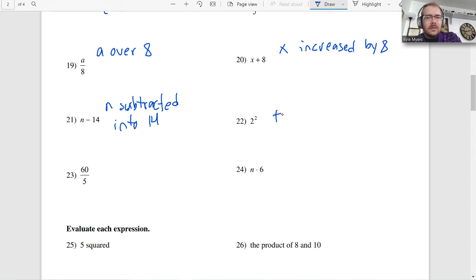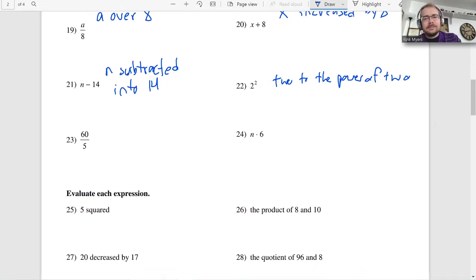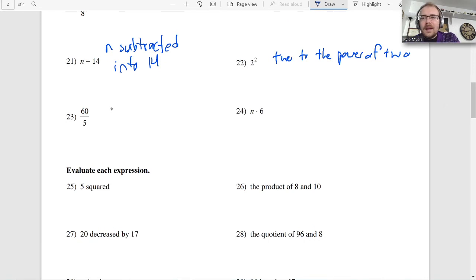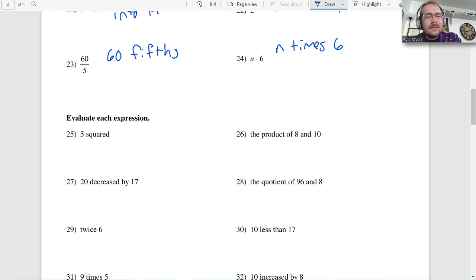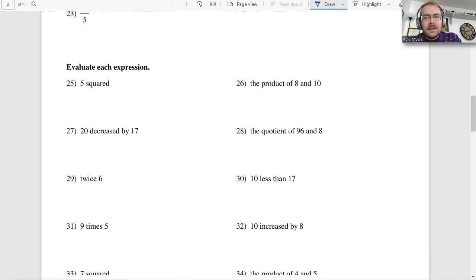This one we could just say 2 squared, I guess. Or I could say 2 to the power of 2. It's almost a tongue twister. 2 to the power of 2. Here I could say 60 fifths, meaning like dividing by 5. That's another way to say that. You could say 60 over 5. 60 divided by 5. 1 fifth of 60. I don't know. A couple different ways there. Here I could say N times 6. A lot of different ways you could say these. You don't have to get too fancy with them. Just kind of stick with something that you like.